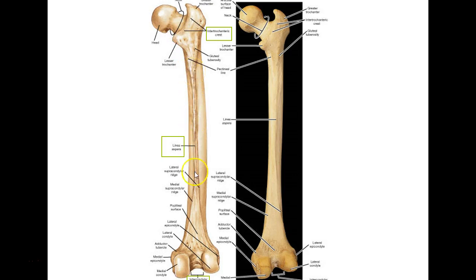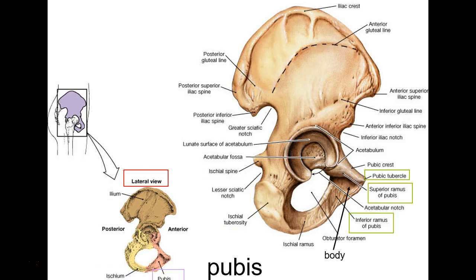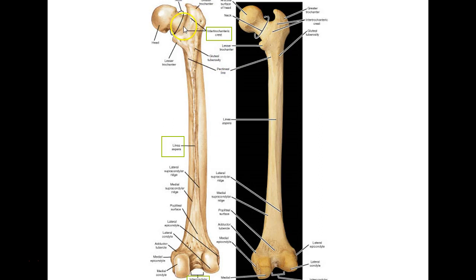On the back there's a very important line running all the way down — it's a point of attachment for muscles called the linea aspera: 'linea' means line, 'aspera' means rough, so 'rough line.' If you can't remember the name but know what it means in Latin, you'll still get half a point. There's also an intercondylar fossa on the back.